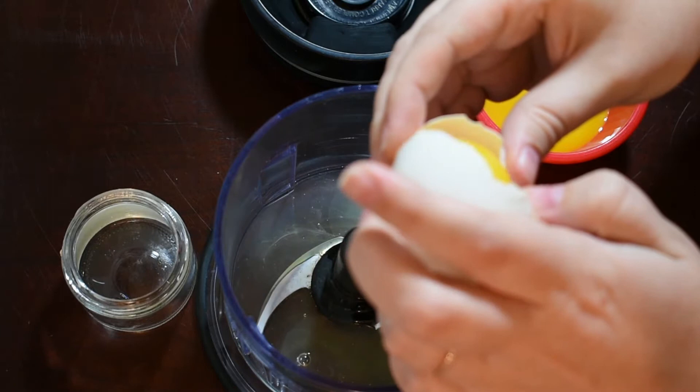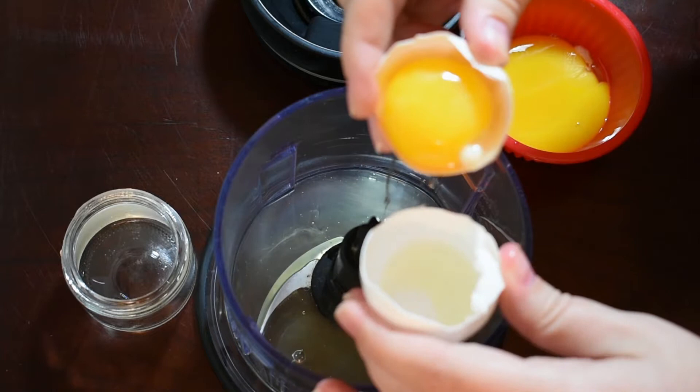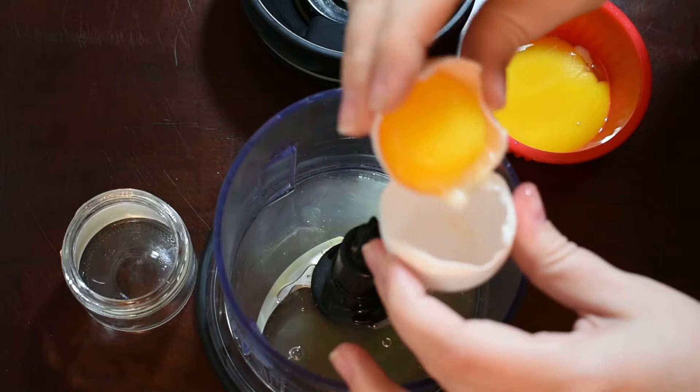Scribe pro tip: if you drop a fragment of shell into the whites by accident, use the shell half that you're holding to retrieve it as opposed to your fingers. The fragment will easily stick to the shell.